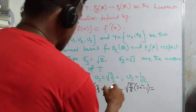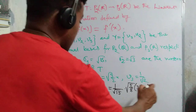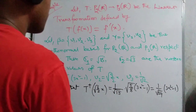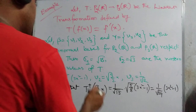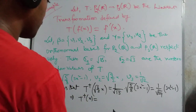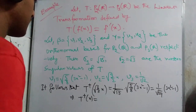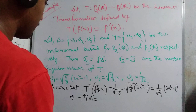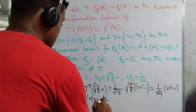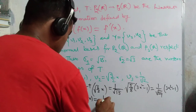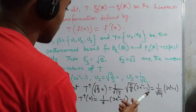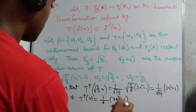Simplifying: T†(√(3/2)·x) = (1/√24)·(3x² - 1) = (1/6)(3x² - 1). Next, T†(u₂) = T†(1/√2) = (1/σ₂)v₂ = (1/√3)·√(3/2)·x = (1/√2)·x.